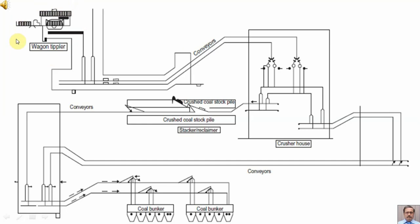Then we are having the conveyors. Then we are having the crusher house where big pieces of coal are broken into small crushed coal. Then this is the crushed coal stockpile 1 and 2.